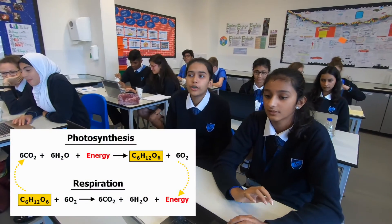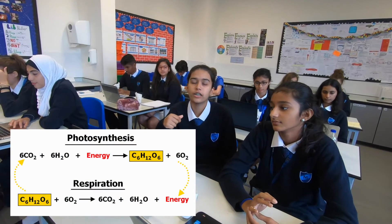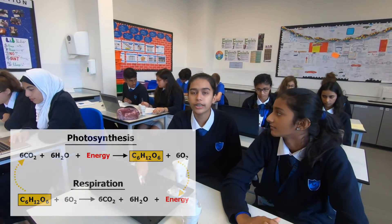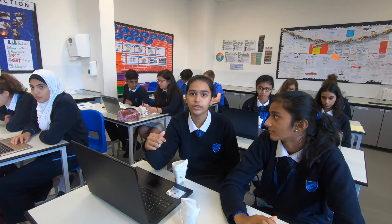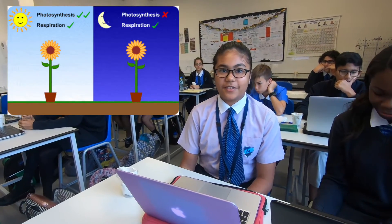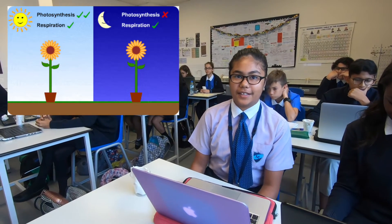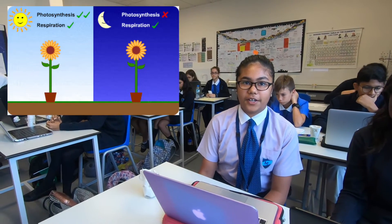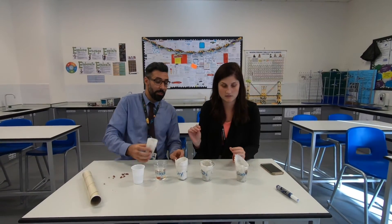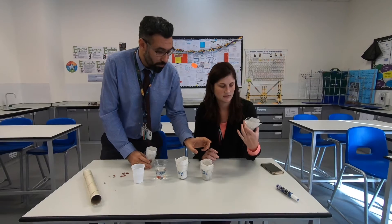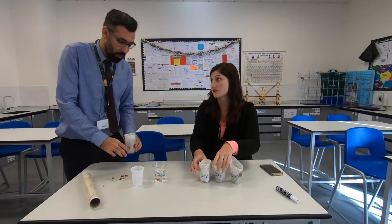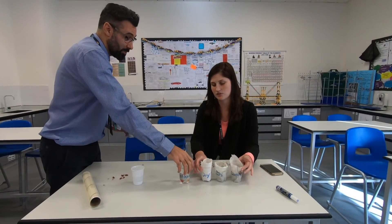Photosynthesis needs sunlight, carbon dioxide, and water, and the products are oxygen and glucose. When plants do aerobic respiration, they use glucose and oxygen and then give off carbon dioxide and water as the waste products. I'm going to place this one in the cupboard. These three need to be the same amount of sun, so they need to go together.